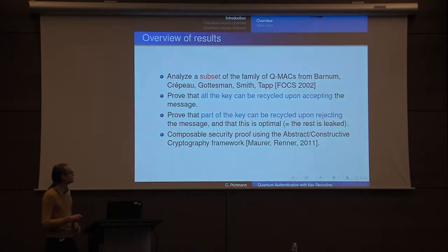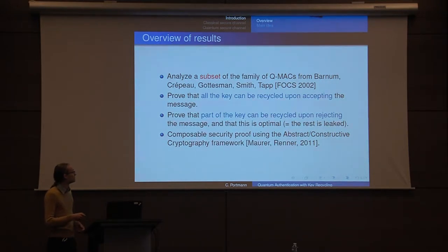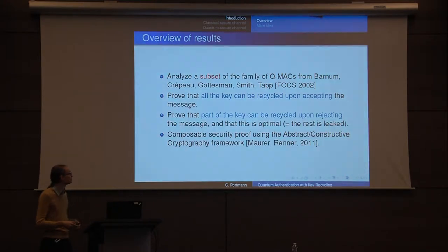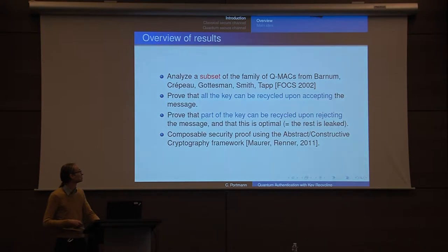We can also recycle part of the key upon rejecting, and we can prove that this is optimal — so all the bits which aren't recycled, you actually cannot get them. This work was written using the abstract and constructive cryptography framework by Maurer and Renner, so it's some kind of composable security proof, very similar to UC — just some kind of simplification and generalization of UC.